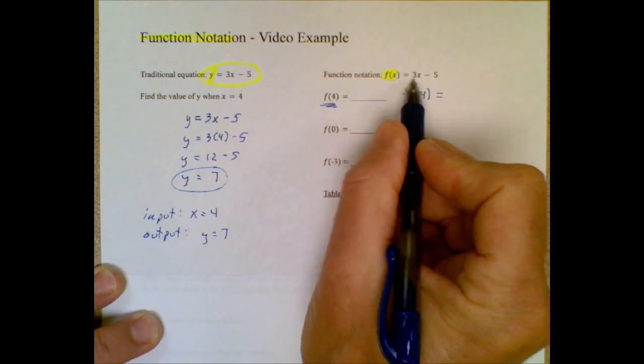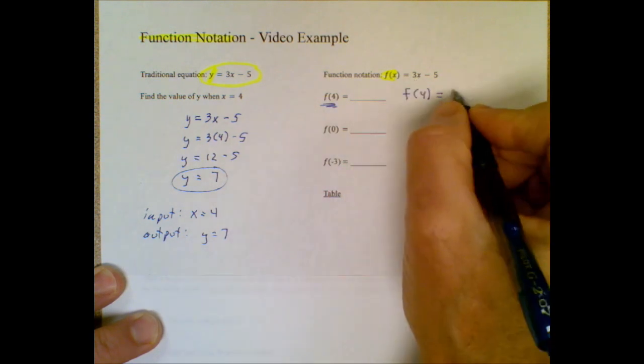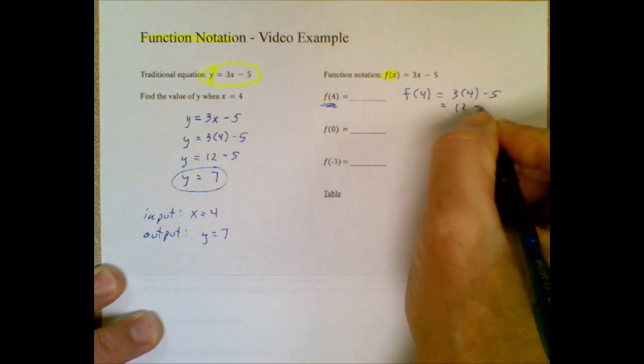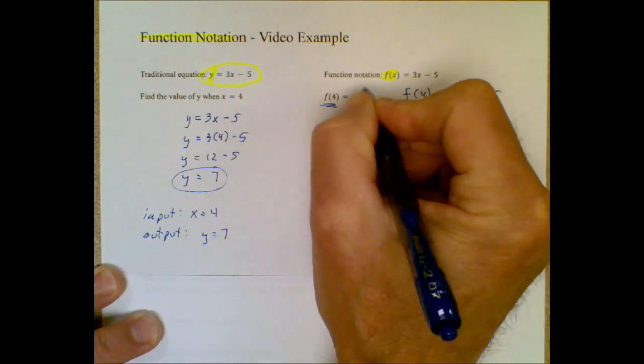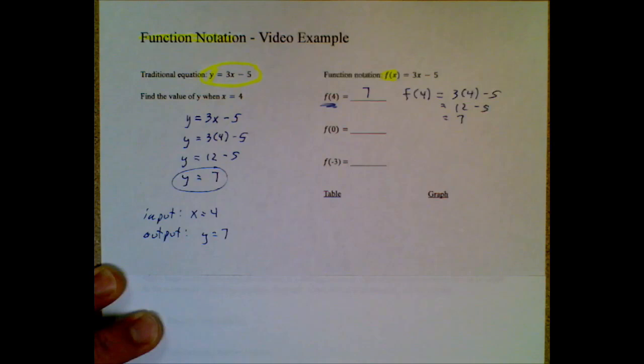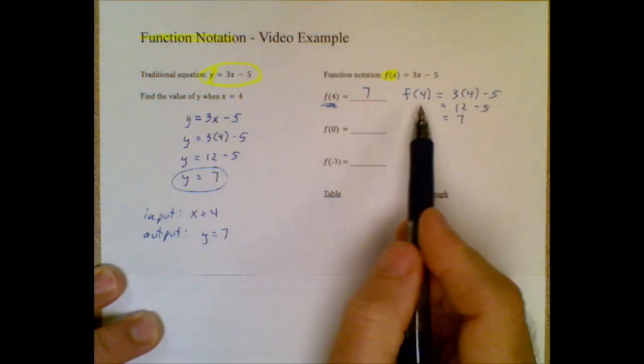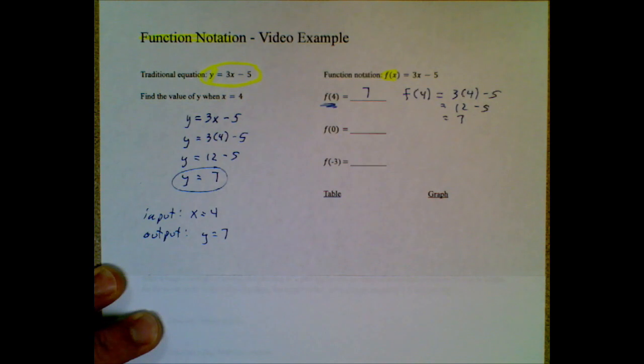4 got plugged in for x, so 4 is going to get plugged in for x. And I get out a 7. So whether you do it the traditional way or you do it in what's called function notation, the math is the same. Nothing changes.